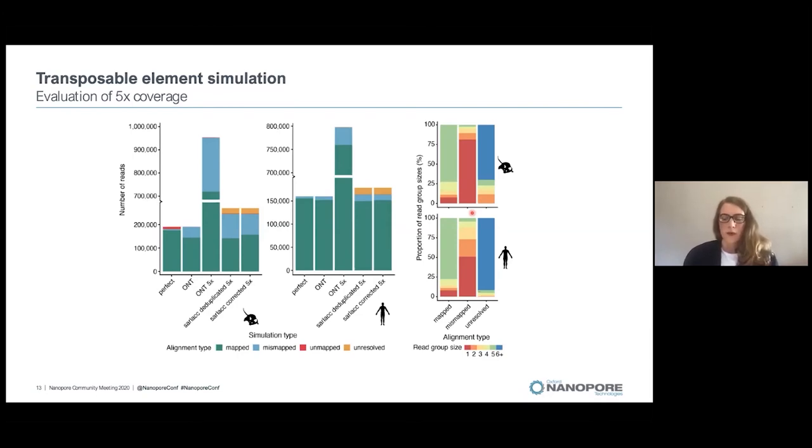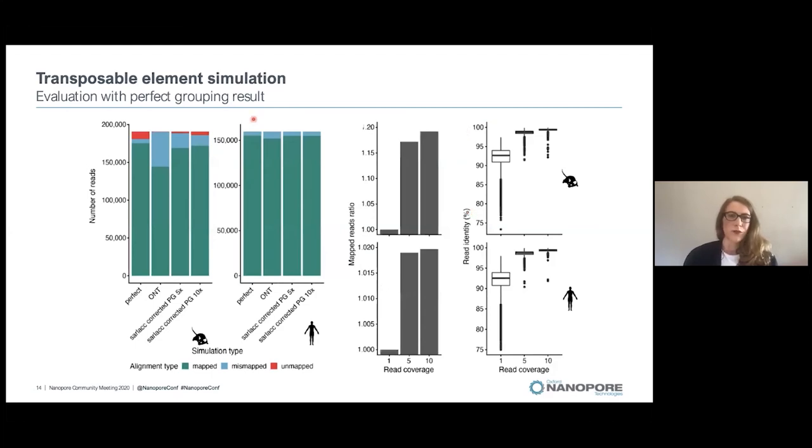Because of this, we wondered whether if we would do perfect grouping of our reads, whether we would increase the mapping ability of our libraries. And this we evaluate here. So here you can see that if we now perform perfect grouping before mapping to the genome, we get much less mismapped reads and they are very similar to the perfect reads. And we get for the mouse genome, a 20% increase of mapping ability. For the human genome, this looks not as amazing anymore, but already a lot of data had been mapped before.